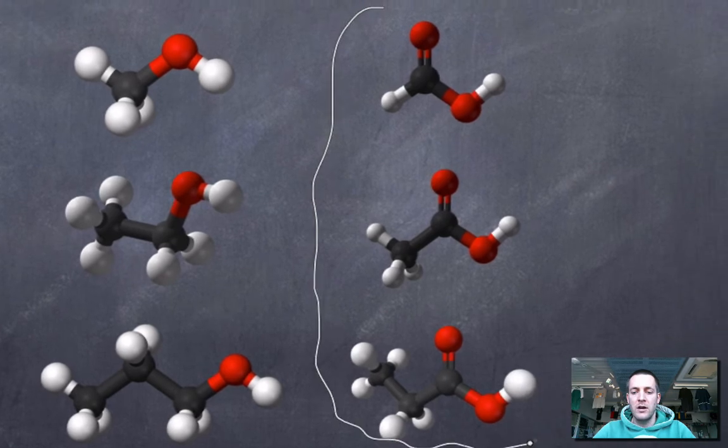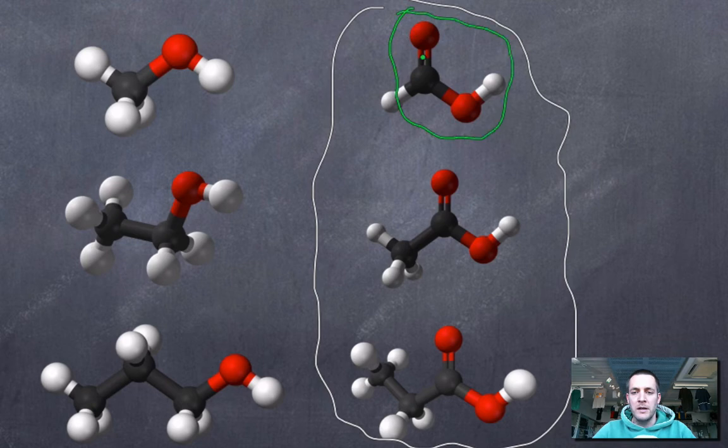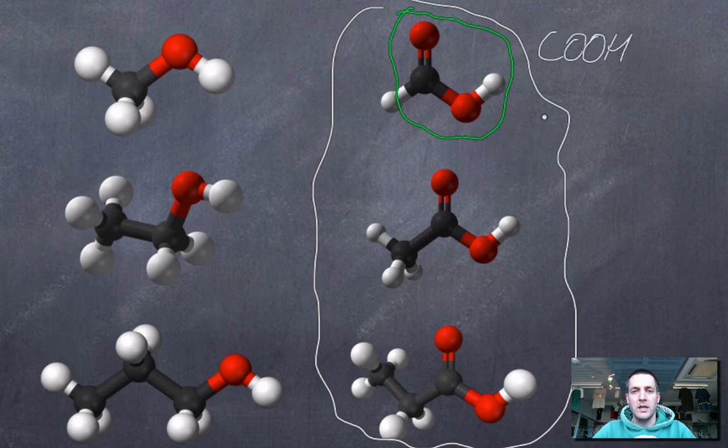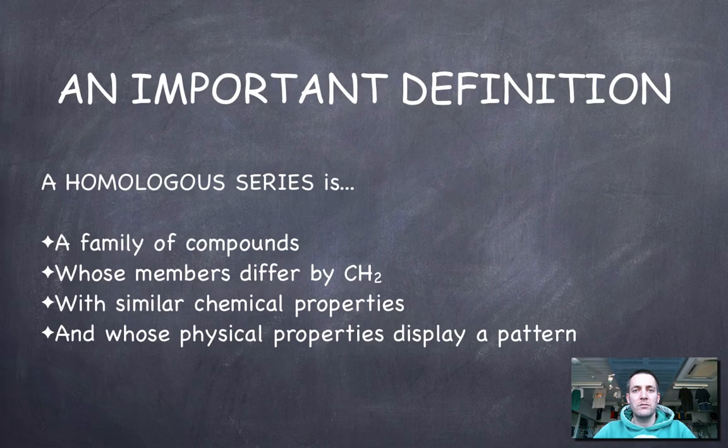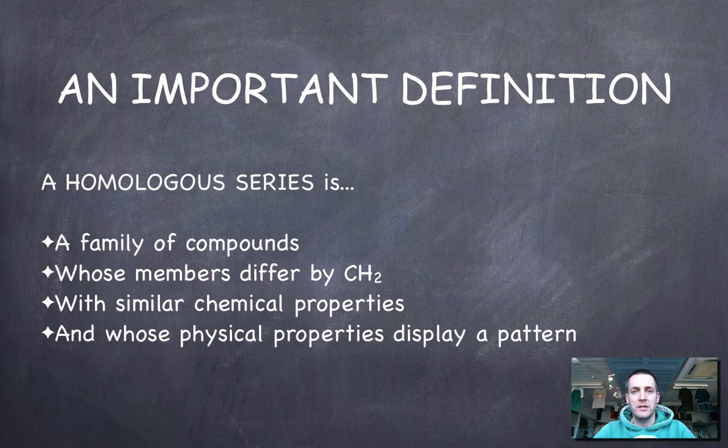And this third set all have a common feature, and that is that they've got carbon double bonded to one oxygen atom, and single bonded to another oxygen atom, which is bonded to an OH. So these all have what we would call a COOH group. And as we'll see later, we call them the carboxylic acids. Anyway, that was really not to tell you too much about the families at this stage, but just to tell you why we have these families.